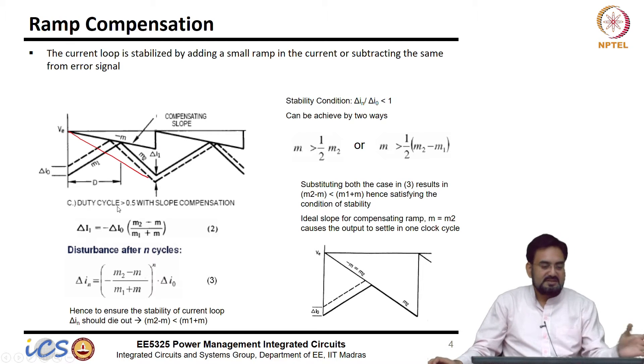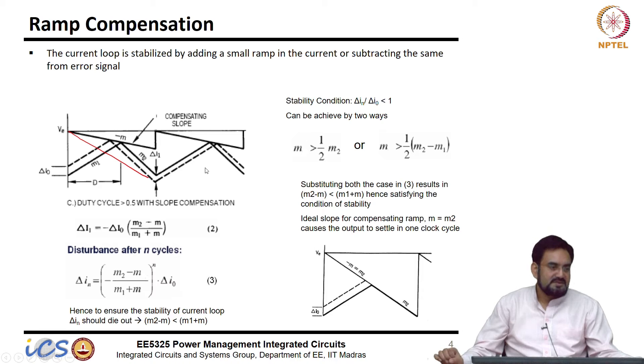So, in that case this whatever the type 2 compensator you have designed that will not work. So, that is why we have to be a bit careful when you are choosing the amplitude of this ramp, it should not be significant compared to your sensed current.